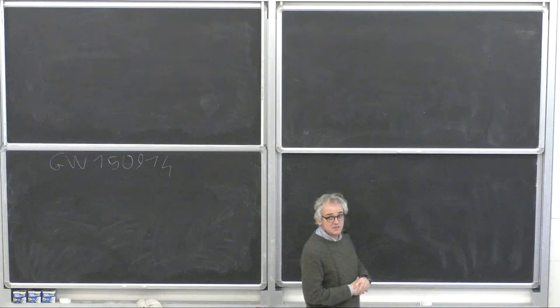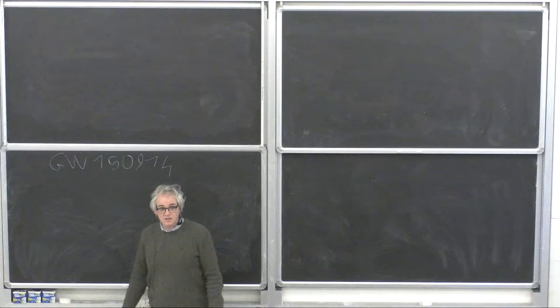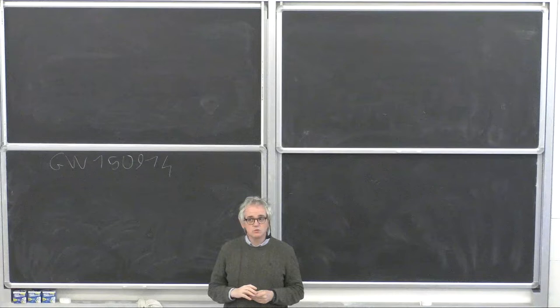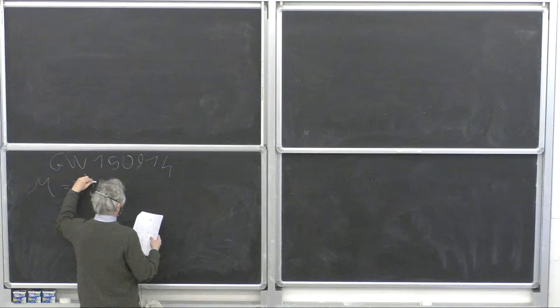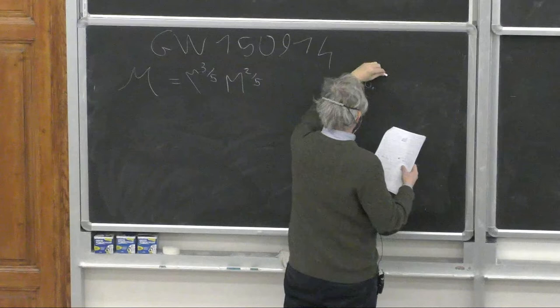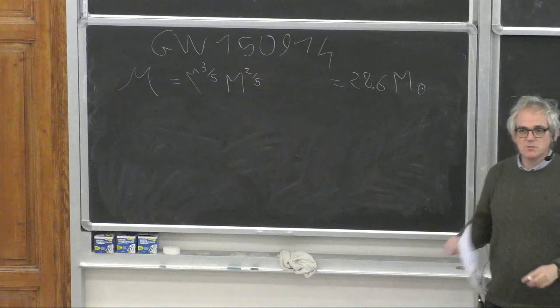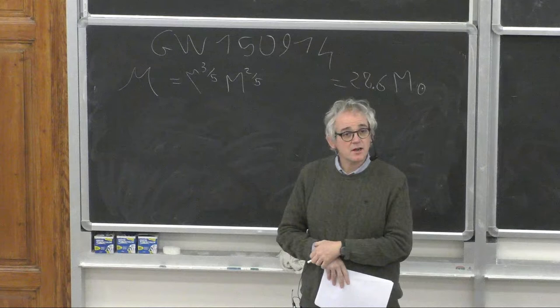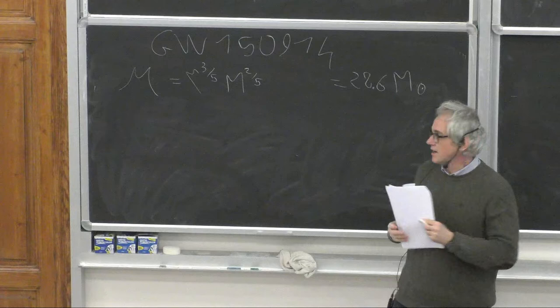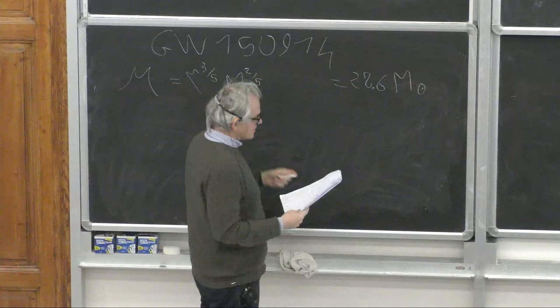Last time we saw that by looking at GW150914 and comparing the observed signal with the quadrupole formula, it was possible to measure the chirp mass. As I said, it is impossible using just this formula to find the individual values of the two masses, but from this we can still learn a lot about the binary system that produces the signal.